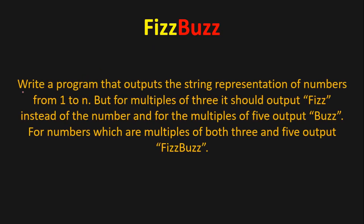Welcome to this video. We're going to cover a coding interview question: FizzBuzz. Write a program that outputs the string representation of numbers from 1 to N. But for multiples of 3, it should output 'Fizz' instead of the number, and for multiples of 5 output 'Buzz'. For numbers which are multiples of both 3 and 5, output 'FizzBuzz'. This is the problem statement.